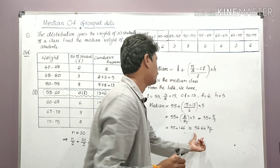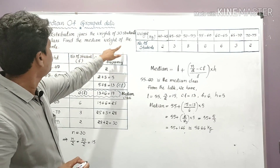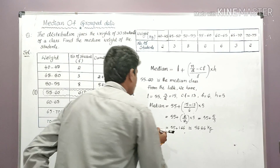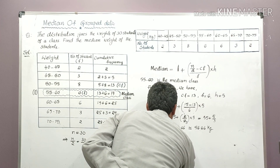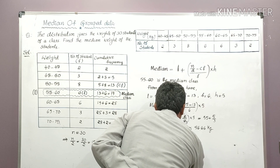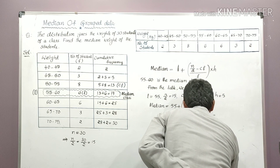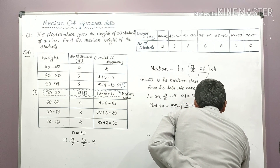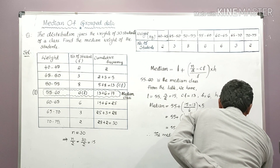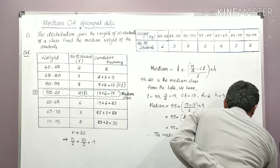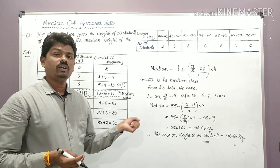This is the median weight of the 30 students. Therefore, the median weight of the students is equal to 56.66 kg. That is how we find the median weight of the given data.